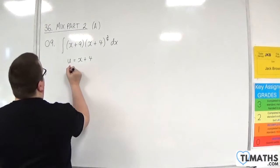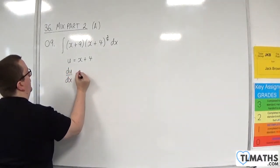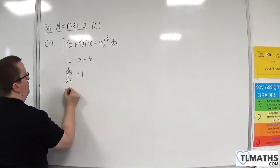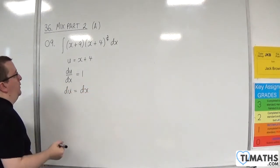So we first of all differentiate the substitution, du by dx is equal to 1, and then rearrange that to get dx is equal to du.